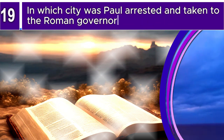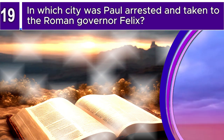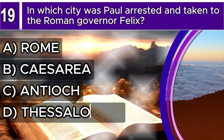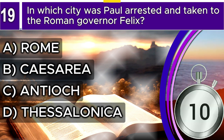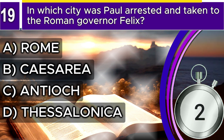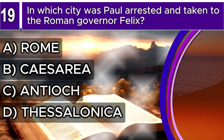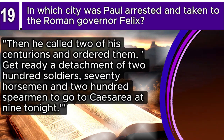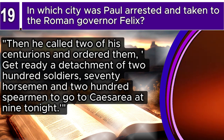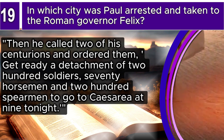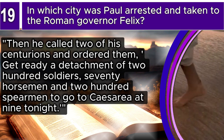Question 19. In which city was Paul arrested and taken to the Roman governor Felix? A. Rome, B. Caesarea, C. Antioch, D. Thessalonica. The correct answer is B. Caesarea. Acts 23, verses 23–24 says: Then he called two of his centurions and ordered them, Get ready a detachment of 200 soldiers, 70 horsemen, and 200 spearmen to go to Caesarea at 9 tonight.